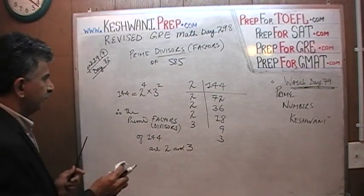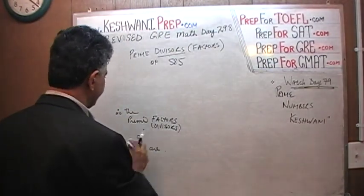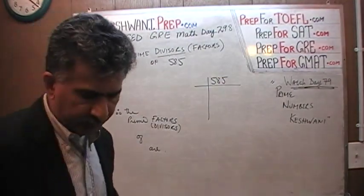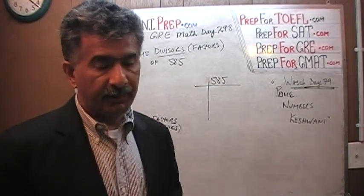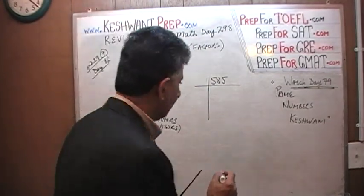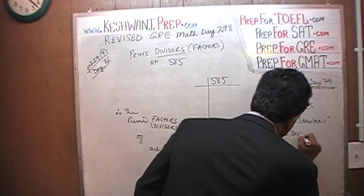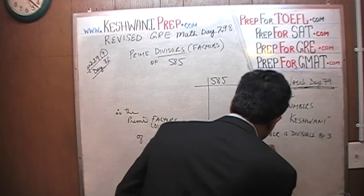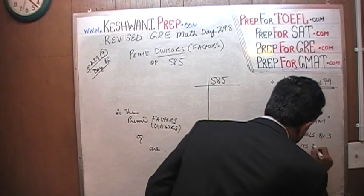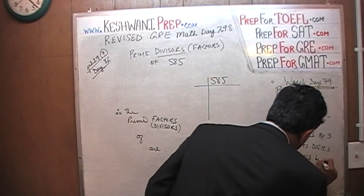The procedure is the exact same thing. What can we divide 585 into? Well, we can't divide it by 2 — it's not an even number. Can we divide it by 3? A number is divisible by 3 if the sum of its digits is divisible by 3.